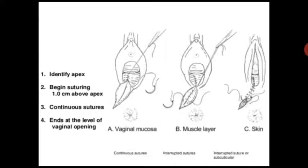For suturing of the episiotomy, first suture the vaginal mucosa, then the muscle layer, then the skin. Identify the apex and begin the suture 1 centimeter above the apex, then continue sutures and end at the level of the vaginal opening.